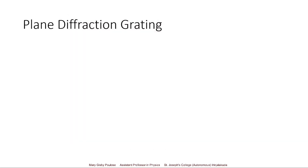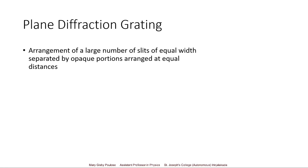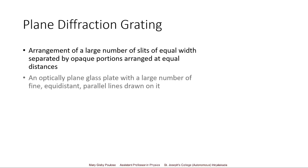What is a plain diffraction grating? It is an arrangement of a large number of slits of equal width separated by opaque portions arranged at equal distances. In other terms, it can be explained as an optically plain glass plate with a large number of fine, equidistant, and parallel lines drawn on it. All three adjectives — fine, equidistant, and parallel — are very important.